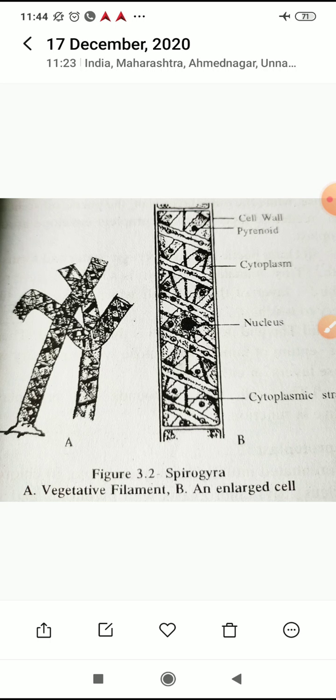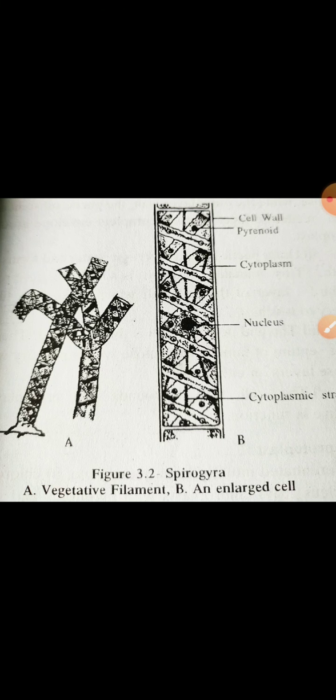Family Zygnemataceae. Distinguishing characters of family Zygnemataceae: the plant body is simple, unbranched, and filamentous. Cells are attached end to end forming an unbranched filament. Cells have ribbon-shaped, parietal, single or two chloroplasts.